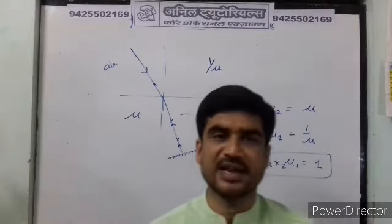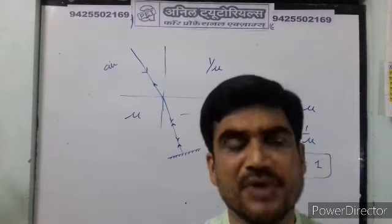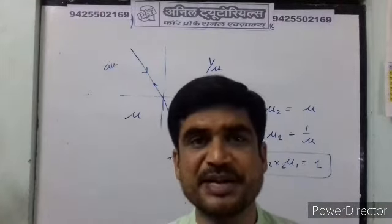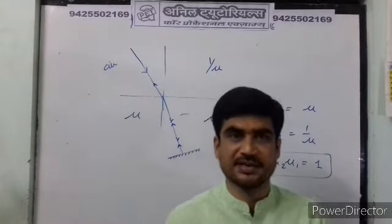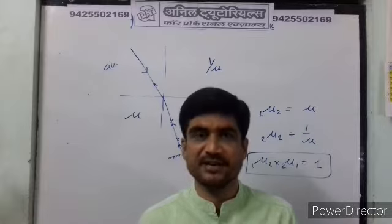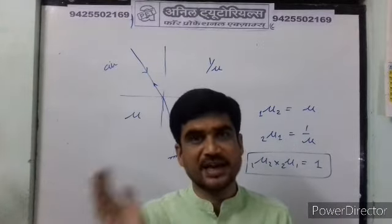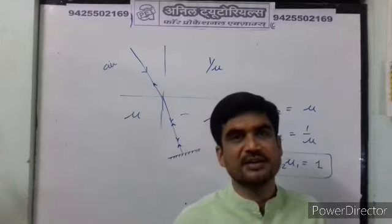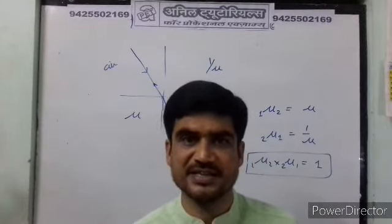When light travels from one medium to another, refraction takes place. During refraction, several properties of light change. Speed changes — in a denser medium, speed decreases, and in a rarer medium, speed increases. Wavelength also changes since light is an electromagnetic wave. Intensity also changes. However, one quantity remains unchanged: frequency. The frequency of light does not change during refraction.